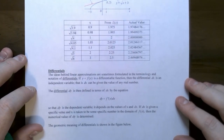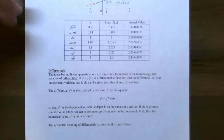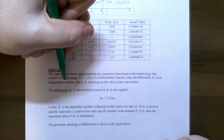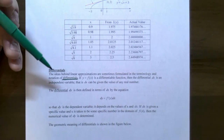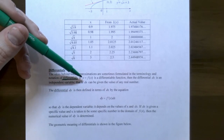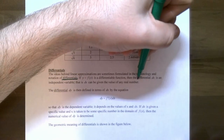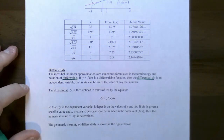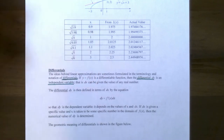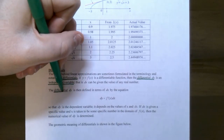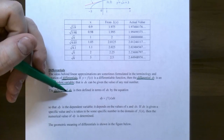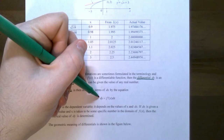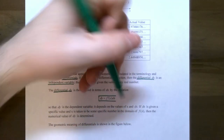Now we're going to look at differentials to finish up the section. The idea behind linear approximations is sometimes formulated in the terminology of differentials, and there's a close relationship between the two. If the function is differentiable — no sharp corners, cusps, or vertical tangent lines — we have the differential dx, which is an independent variable and can be any real number. The differential dy is defined in terms of dx: dy equals f prime of x times dx. So dx is like the input variable and dy is the output or dependent variable.